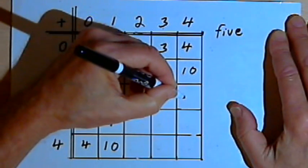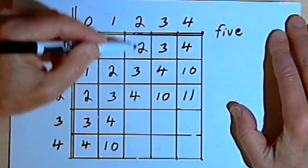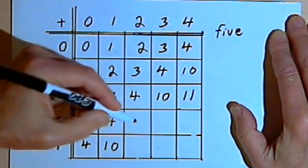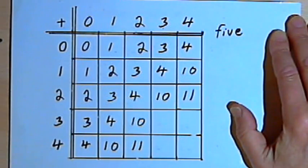And then my last number in that row is going to be 1, 1, the number that comes after 1, 0. I can do the same thing for the 2's column. I'll have 2, 3, 4, and then 1, 0, 1, 1.